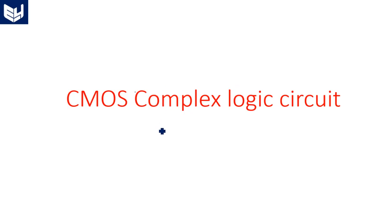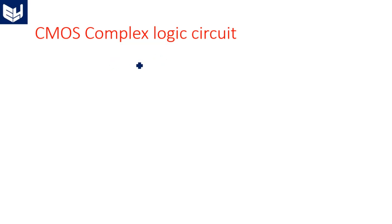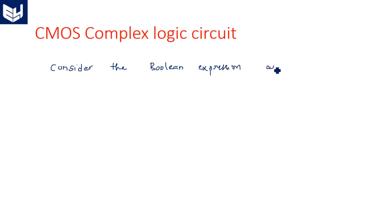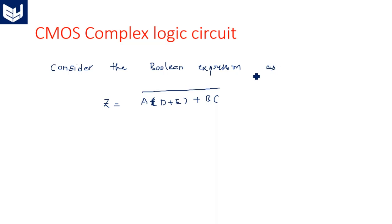In this video, I am going to explain complex logic circuit design with the CMOS implementation. In the previous video, I explained complex logic circuit design with the NMOS realization. We will consider the same example here. Consider the boolean expression Z = A(D + E + BC)̄. Any type of three-input realization may be considered as a complex logic circuit design.